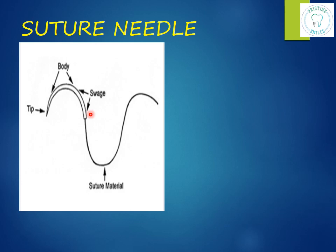Classifying the needle by the presence or absence of the eye — eyed needles require the thread to pass through the eye, giving a double thickness of thread. In eyeless needles, there is single thickness. The suture material is sometimes fused onto the needle — this is called swaging. Swaging is better because it avoids double thickness of thread, making it atraumatic, acting as a single unit. These are pre-packed and pre-sterilized by gamma radiation.